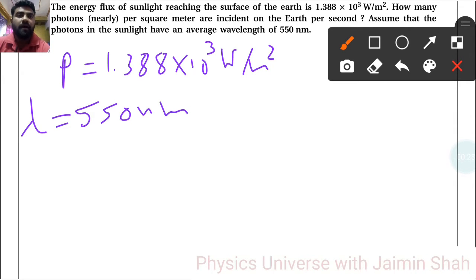We have to find how many photons are there - we have to find capital N. We know that the formula P = N × E, which is P = N × hc/λ. So N is what we have to find.